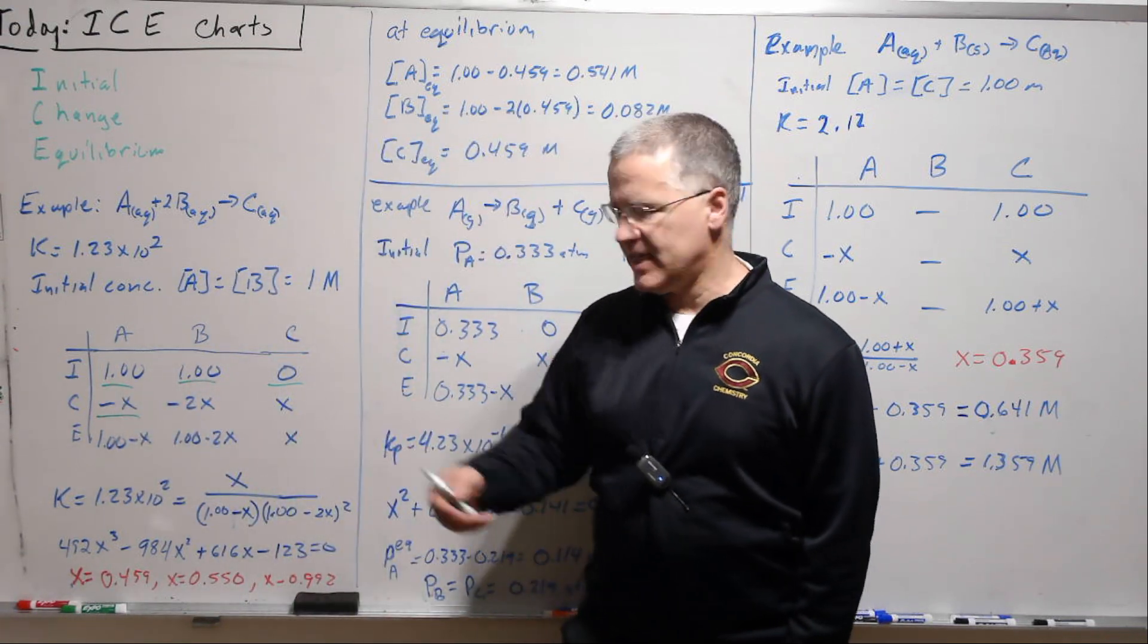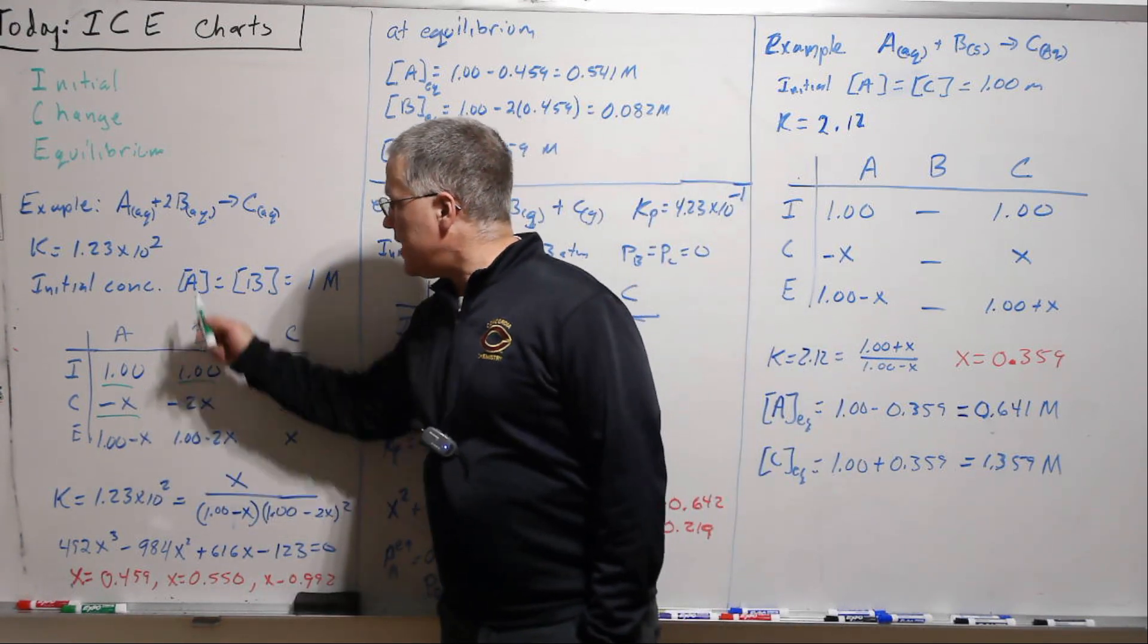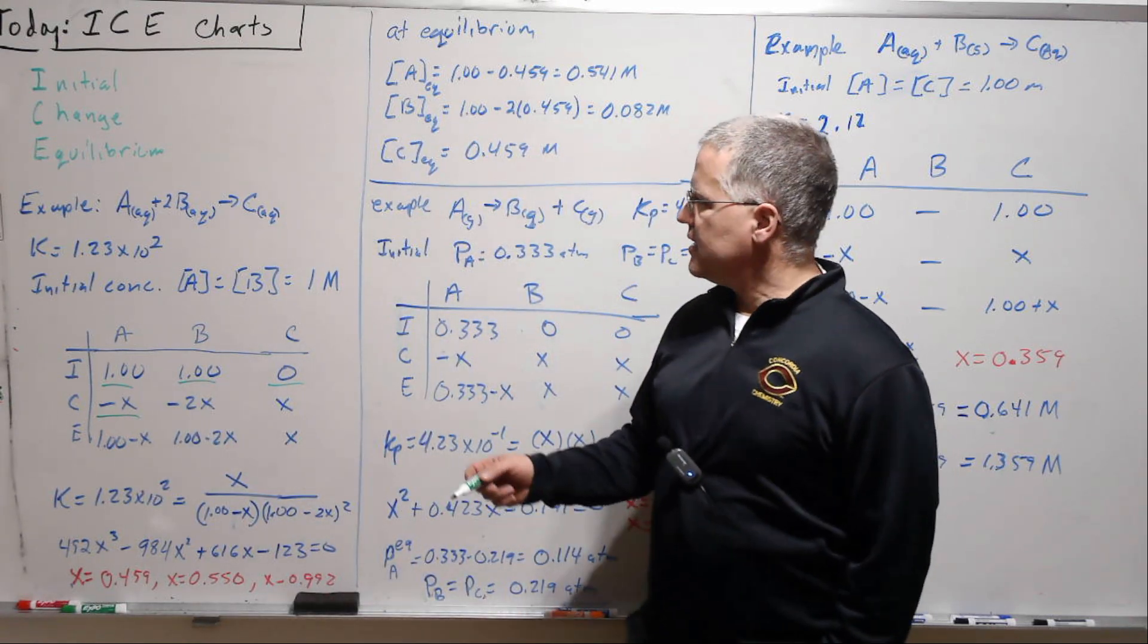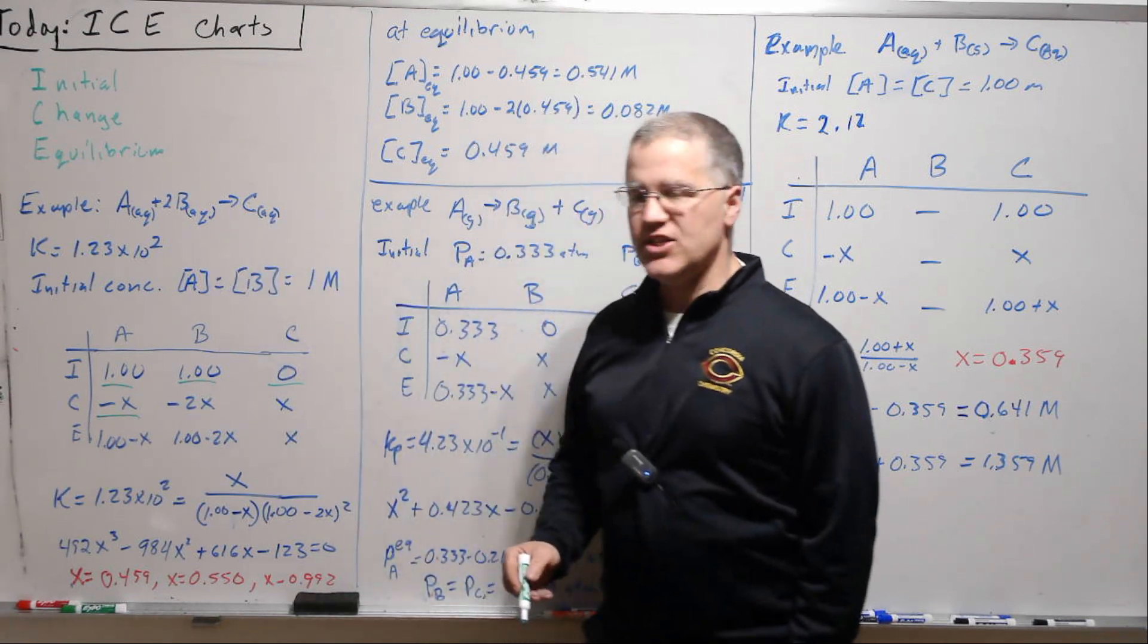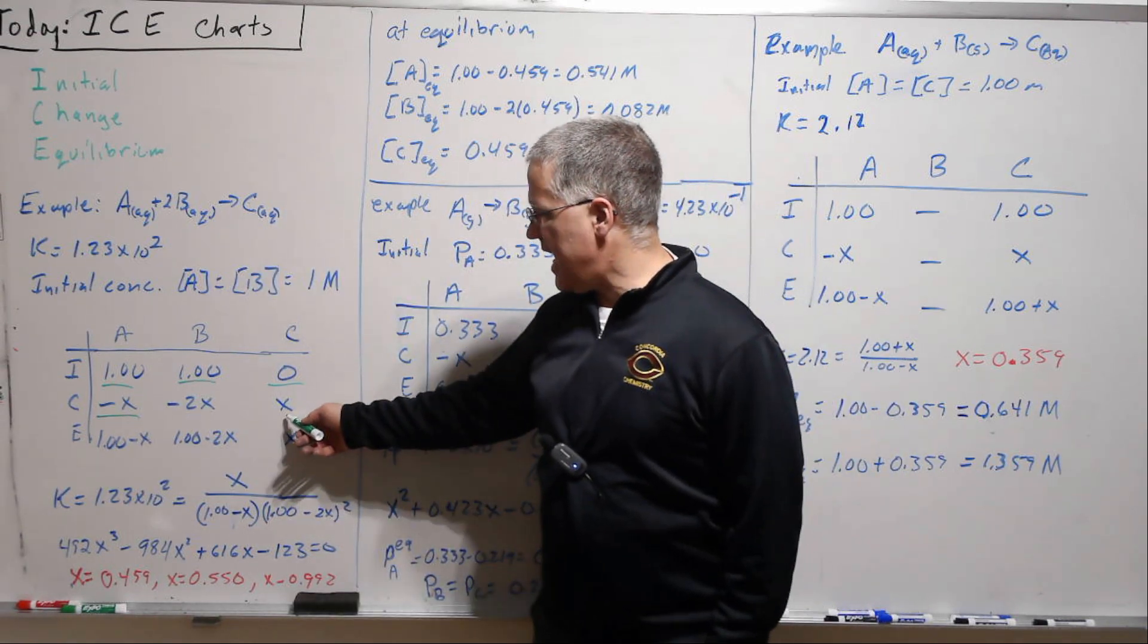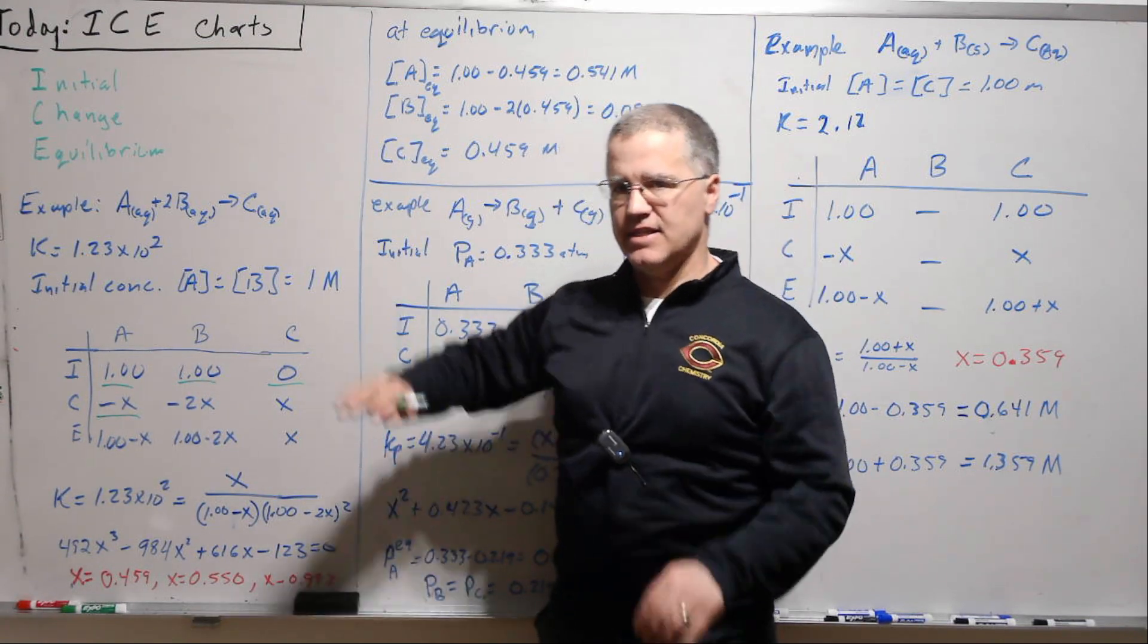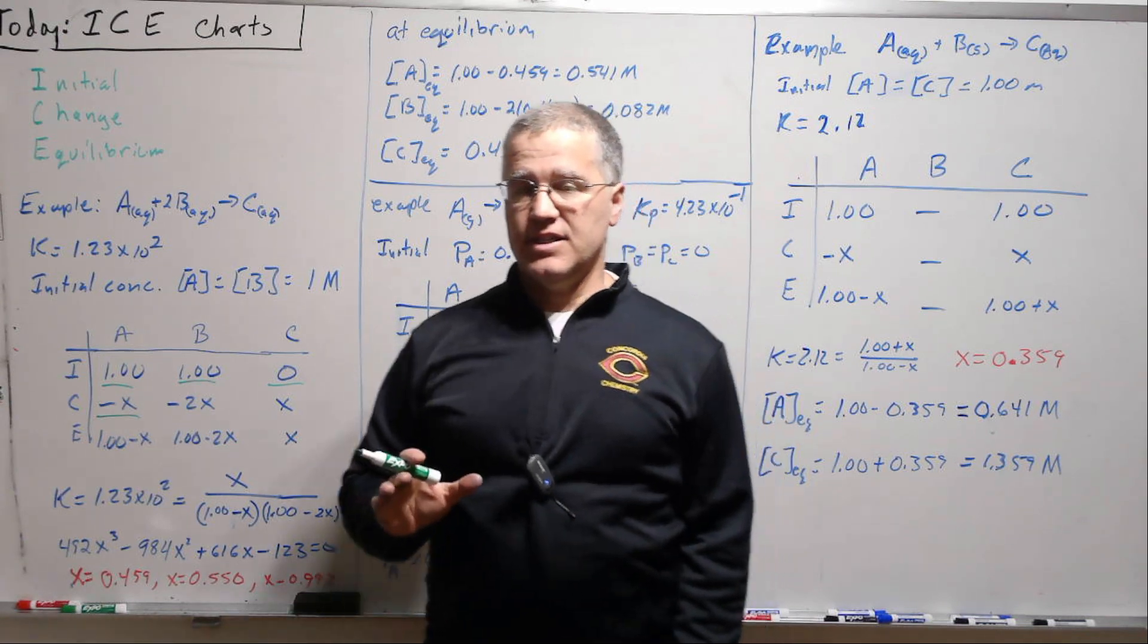So it's good to say, okay, I'm going to let the change in A be minus X, because it's going down, that way X will be a positive number. If that's true, then by the stoichiometry, the change in B is minus 2X, and that's coming straight from the stoichiometry, and the change in C is X, because X goes up. If A comes down by X, C goes up by X.